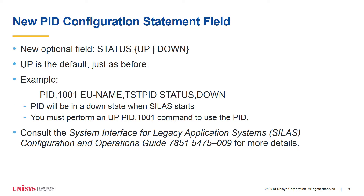Use the new status field on the PID configuration statement to configure the state of a PID. You can select up or down on this field. If you do not specify this field, the PID starts in an up state as in previous releases of SYLUS. You can still use the up or down PID user command to change the state of a PID. The status configuration field sets the initial state.